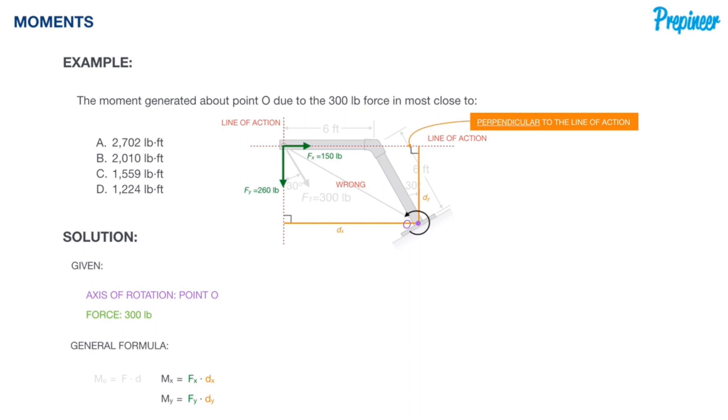Now each of these forces are going to create a moment about the axis of rotation at point O. There is one very important point to make here, because it's a point of failure for many engineers we have worked with in the past. Come exam day, if you don't have this dialed in and it's not automatic, then you're toast on these problems. And that is the sense of the moment.